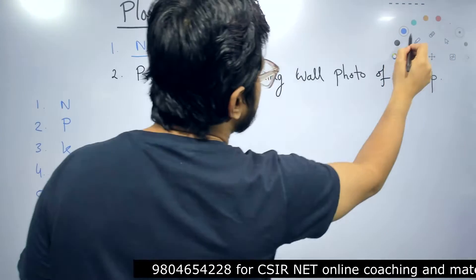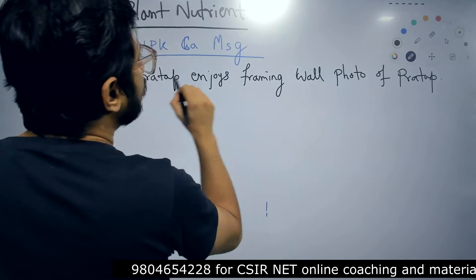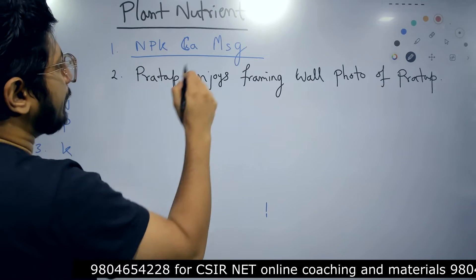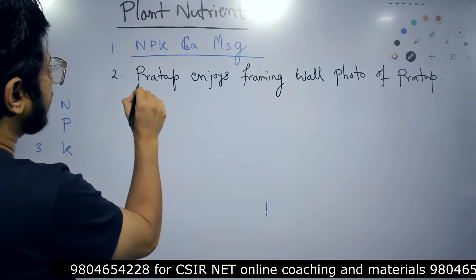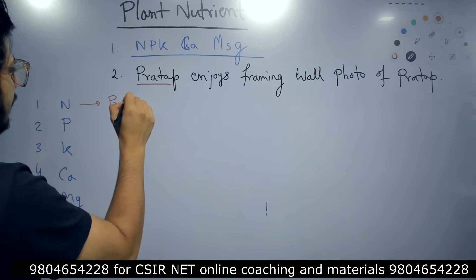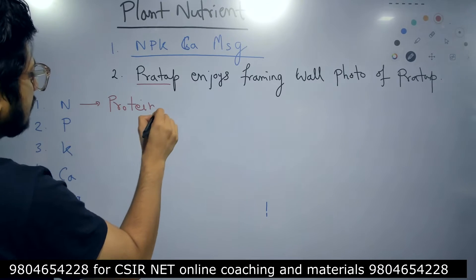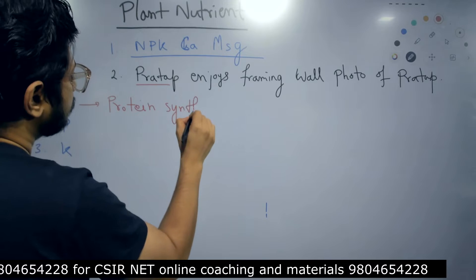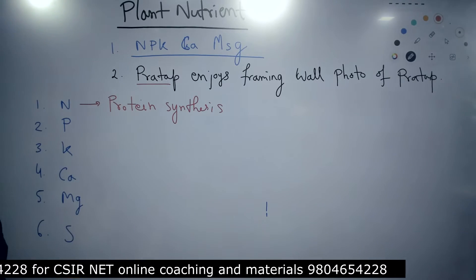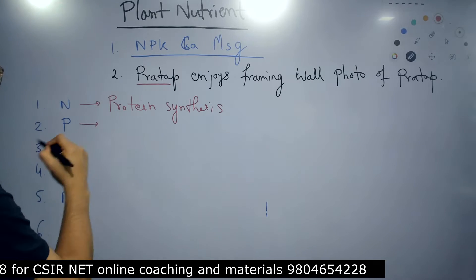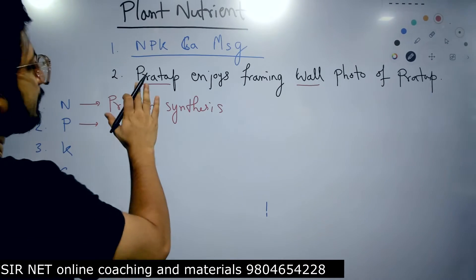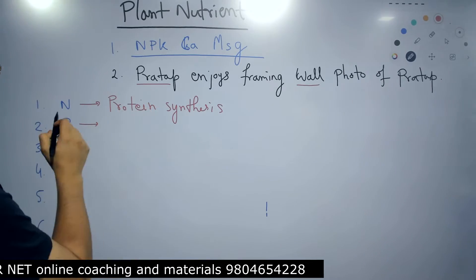And then we have this sentence. We will utilize this sentence to put the name of the function of these different macronutrients in our brain. Starting with Pratap, P for protein synthesis. So the first macronutrient, that is N, nitrogen, is involved in the process of protein synthesis. Alright, so the protein synthesis is done. So Pratap, first pro for protein synthesis for nitrogen.